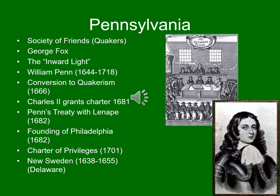In the Charter of Privileges, the three lower counties of Pennsylvania — which had been the colony of New Sweden — asked for their independence and Penn granted it. They became the colony of Delaware. The Quakers were called Quakers by outsiders because of their belief in experiencing God or the Holy Spirit personally; the belief was that when they did have these experiences they would quake and shake in the sight of the Holy Spirit.